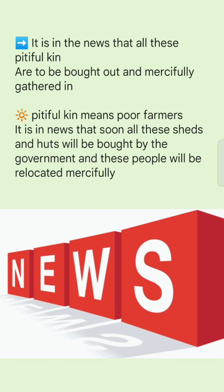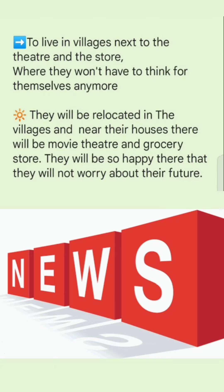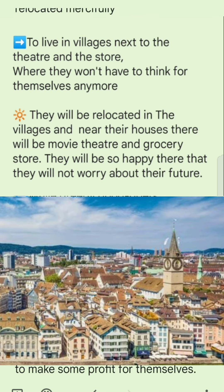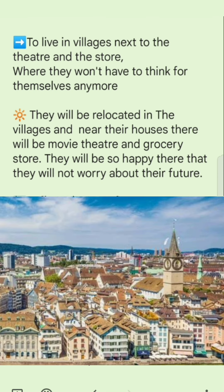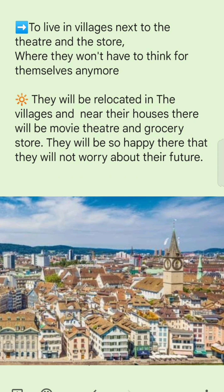'It is in the news that all these pitiful kin are to be bought out and mercifully gathered in.' 'Pitiful kin' means poor farmers. It is in the news that soon all these sheds and huts will be bought by the government, and these people will be relocated mercifully — to live in villages next to the theater and the store, where they won't have to think for themselves anymore. There will be movie theaters and grocery stores nearby, and they will be so happy there that they will not worry about their future.